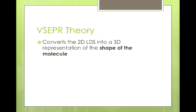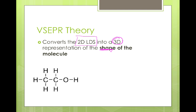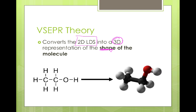Enter the new chemical concept: VSEPR theory. VSEPR theory's job is to convert the two-dimensional Lewis dot structures we've already identified into three-dimensional representations of the actual shape of the molecule. This provides us with the extra information that Lewis dot structures weren't capable of providing — we'll be able to take the flat picture of ethanol and convert it into a three-dimensional representation.